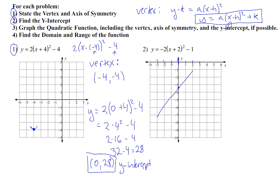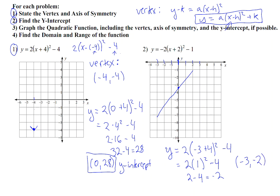Since our vertex was at negative 4, we could find the y value when x is equal to negative 3. So: y equals 2 times negative 3 plus 4 squared minus 4. Negative 3 plus 4 is 1, squared, minus 4. So I have 2 times 1, which is just 2. 2 minus 4 is equal to negative 2. That gives me another point on my parabola: when x is negative 3, y is negative 2. Now I can plot that on my parabola — negative 3, negative 2 is right here.